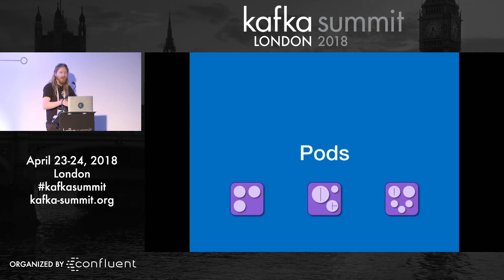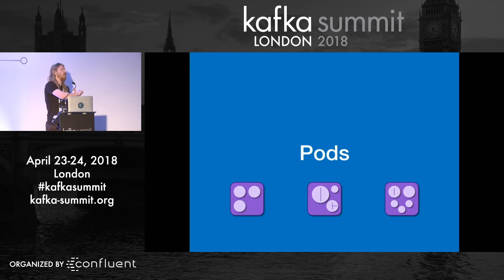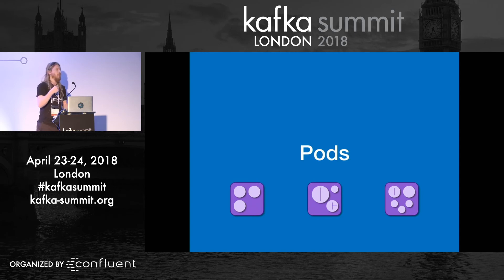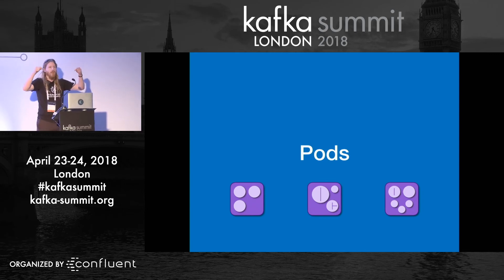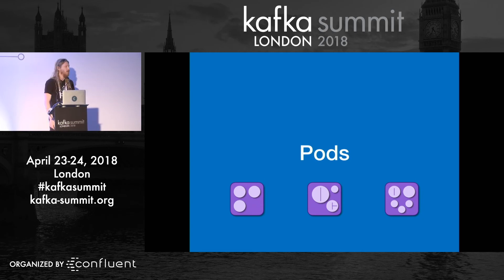Containers exist inside a pod — a pod is built of containers. Kubernetes schedules pods, not individual containers, so all containers from a pod are scheduled together. This can be useful: if you've got a Kafka broker and a container that reads JMX and reports metrics, they will always be together on the same machine. They also share a network space, so the metrics container can always refer to the Kafka broker as localhost — for example, localhost 9092. They can also share directories, which can be super handy in a practical sense.